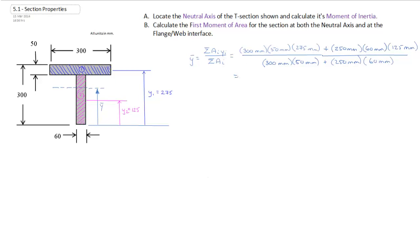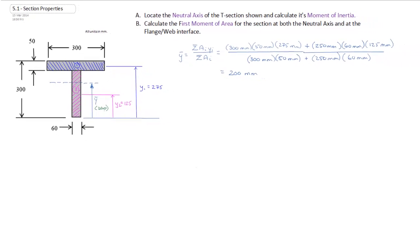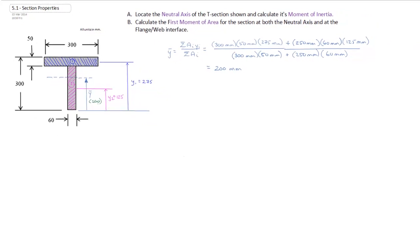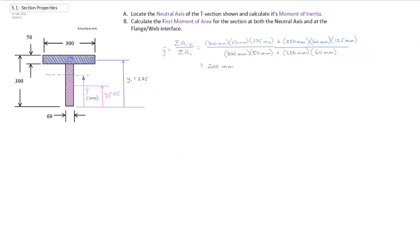And that allows us to calculate the centroid, which is at 200 millimeters. And I'm going to go over here and label that as 200. And that's how we calculate the centroid and identify the location of the neutral axis for a composite cross-section.